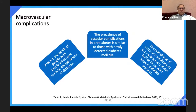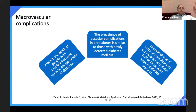Regarding macrovascular complications, around one-tenth of people with even pre-diabetes — even before diabetes develops — already have vascular complications. The prevalence of vascular complications in pre-diabetes is almost like newly detected diabetes. There are three stages: normal glycemia, pre-diabetes, and diabetes. Studies show that five to seven years before the onset of diabetes, microvascular changes happen leading to complications. The prevalence of vascular complications in pre-diabetes is almost one-half of what you see in overt diabetes.